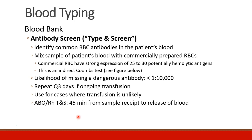We usually repeat a type and screen every three days, especially if a patient is undergoing ongoing transfusion and their exposures and antibodies may change. A type and screen is appropriate when it's not likely that you'll need to transfuse, but you want to make sure it will be easy to get blood ready if you need it. It takes about 45 minutes from the time the blood bank receives the sample until the type and screen is done and they're ready to release compatible blood.